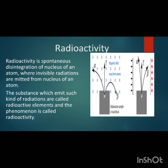Elements with atomic number 82 or below will not show radioactivity. From a radioactive source, three radioactive rays emerge: alpha, beta, and gamma. A radioactive source, radioactive atom, and radioactive element all fall under the same category.